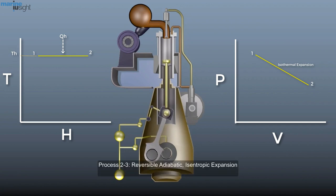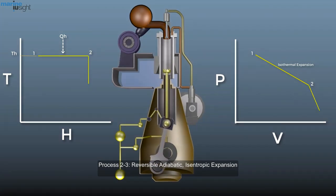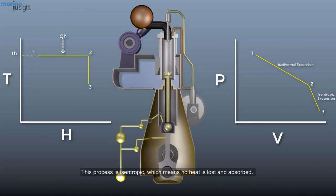Process 2-3: Reversible isentropic expansion. This process is isentropic, which means no heat is lost and absorbed. Gas continues expanding slowly until the temperature drops from Th to Tl.